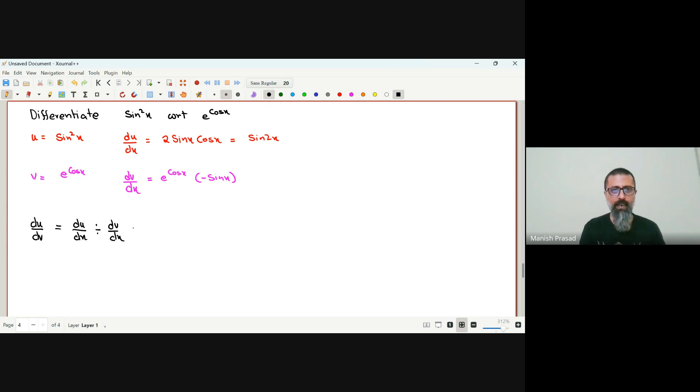अब इसको हम यहां पे डाल दें, तो divide में करना है, तो हमारा 2 sin x cos x, the whole thing divided by e to the power of cos x, minus sin x, तो sin x sin x cut गया, तो हमारे पास क्या बचेगा.